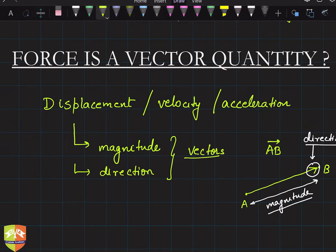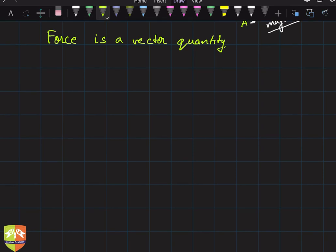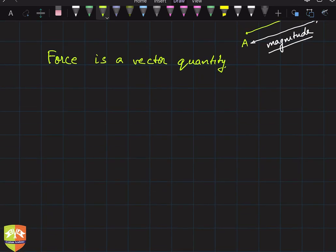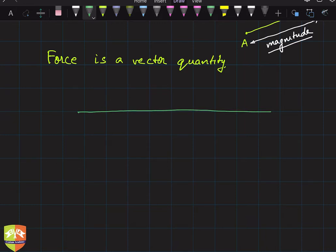Similarly, force is also a vector quantity. We can explain this using the example of a tug of war. In a tug of war there is a rope with a kerchief in the middle, and two teams pull the rope in opposite directions. Let's say F1 is the force applied from one side and F2 is the force applied from the other side. The kerchief stays in the middle if both teams are applying the same amount of force.